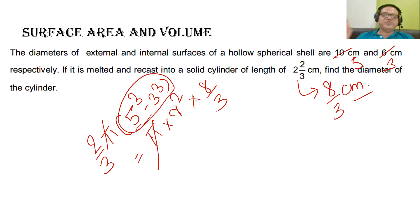5 cube is 125, 3 cube is 27, so 125 minus 27 will be equal to 98. Now, here, a cube minus b cube is equal to a minus b multiplied by a square plus ab plus b square.